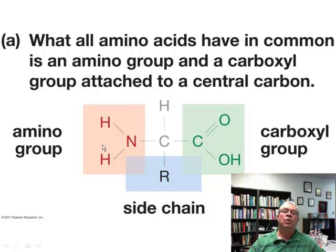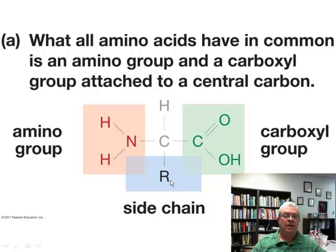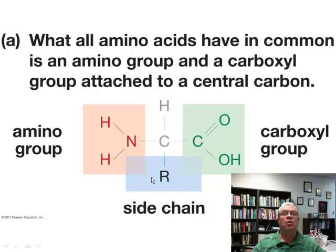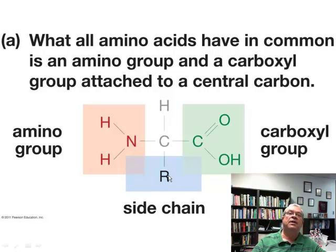So what makes one amino acid different from another? It's this R group, or side chain. There are twenty different amino acids in proteins. What makes one amino acid different from another is this R group — because there are twenty different R groups in the amino acids of proteins.